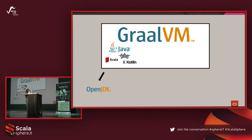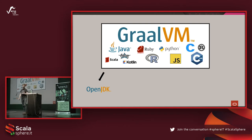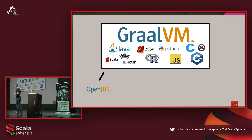GraalVM can run any JVM language — Java, Scala, Groovy, Kotlin, Clojure. But it's a compiler that can also run Ruby, Python, JavaScript, and also native languages like C, C++, R, or Rust. All those languages can run in the context of OpenJDK, being JIT compiled as I explained.